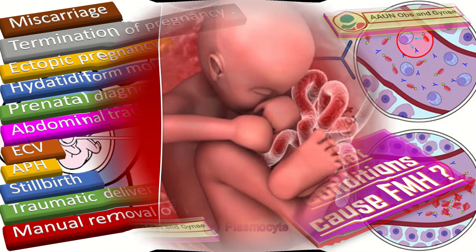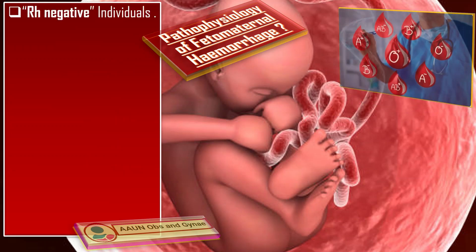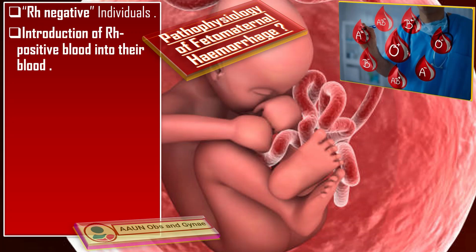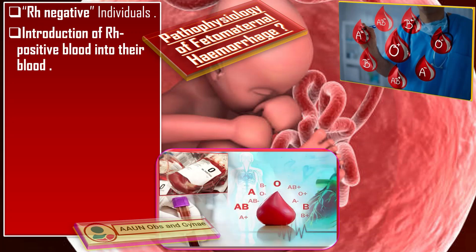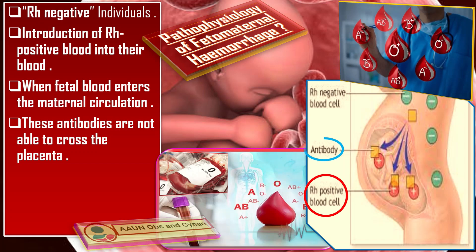Regarding pathophysiology: pregnant individuals are considered RH negative when they do not have the rhesus factor on the surface of their red blood cells. For these individuals, the introduction of RH positive blood into their circulation may induce the formation of anti-RH antibodies. This process can occur when fetal blood enters the maternal circulation, thereby inducing the formation of maternal anti-RH antibodies against the fetal red blood cells. These antibodies are not able to cross the placenta during the first pregnancy, so they cannot harm the first baby.